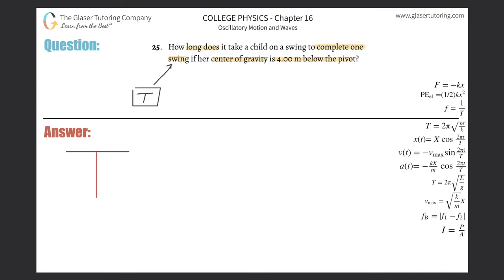And then it says if the center of gravity is four meters below the pivot point. Here's a pendulum, and here's a picture. That red line represents the length of the pendulum.